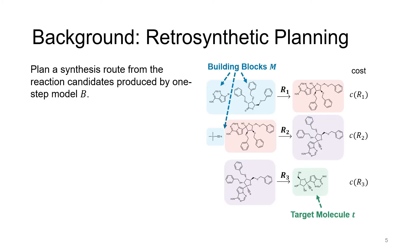With the chemical reaction space defined by the one-step model B, we are able to convert the retrosynthesis problem into a multi-step planning problem, where the actions must be chosen from the reaction candidates produced by the one-step model.